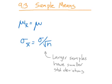This is the video for section 9.3, Sample Means. When we talk about sampling distributions, the problems get categorized into two big categories: means and proportions. In section 9.1 we did some general terms. Section 9.2 was all about proportions. Section 9.3 is all about means.